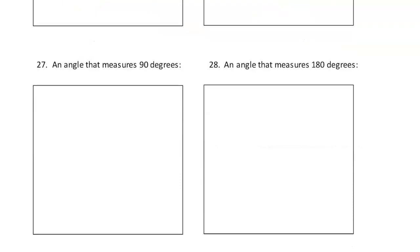An angle that measures 90 degrees — that's pretty easy, that's just going to be straight up and down. Here's the bottom of my angle as a ray, here's the vertical section, and I'm going to put a box right here, because the box indicates that I have a right angle — a 90 degree angle.